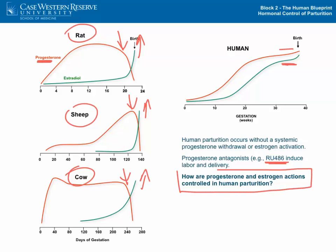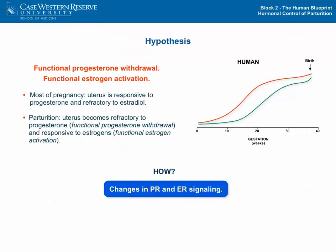So the question is: how are progesterone and estrogen actions controlled, given that they don't appear to be controlled by the circulating levels? The leading hypothesis is that instead of the function of these steroids being regulated by the circulating level, the function is regulated by the sensitivity of the target cells to these steroids — a functional progesterone withdrawal and a functional estrogen activation that trigger the process of parturition.